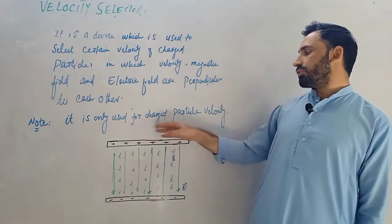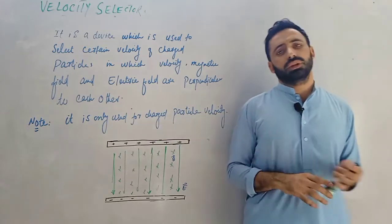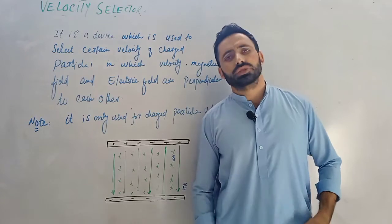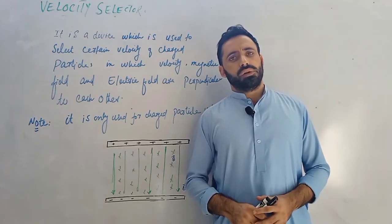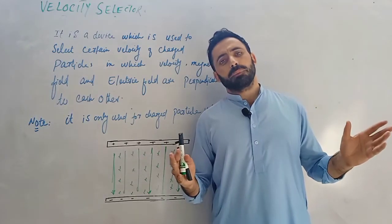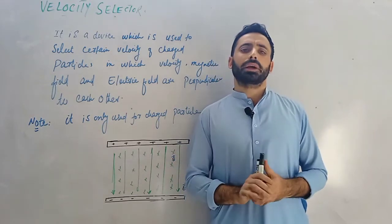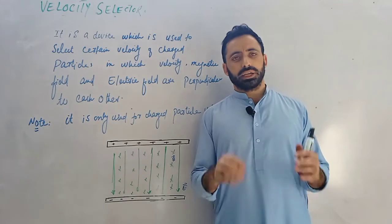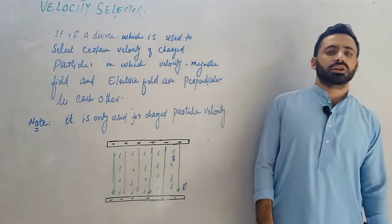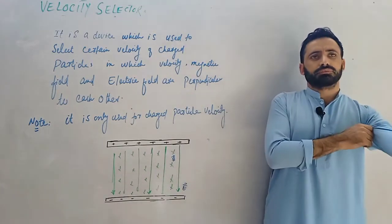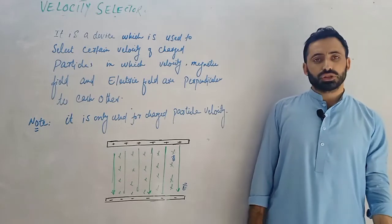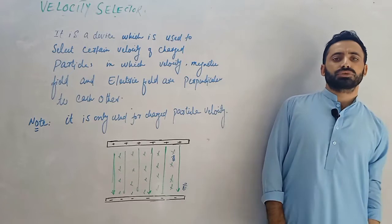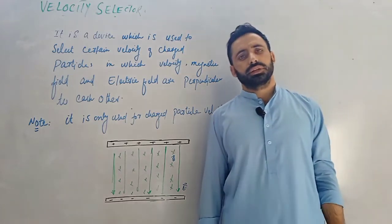It is only used for charged particles. Uncharged particles cannot be selected. There is no deflection effect on uncharged particles. Examples of uncharged particles include neutrons, photons, and gamma rays.